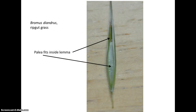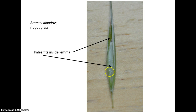Lastly, this is from ripgut grass — just another view so you can see the lemma and folded inside it the palea, which is generally thinner. Beneath the palea, it looks like we're developing a fruit already, because this is going into seed. Hopefully that's been a not-too-painful introduction to some parts of the wonderful world of grasses.